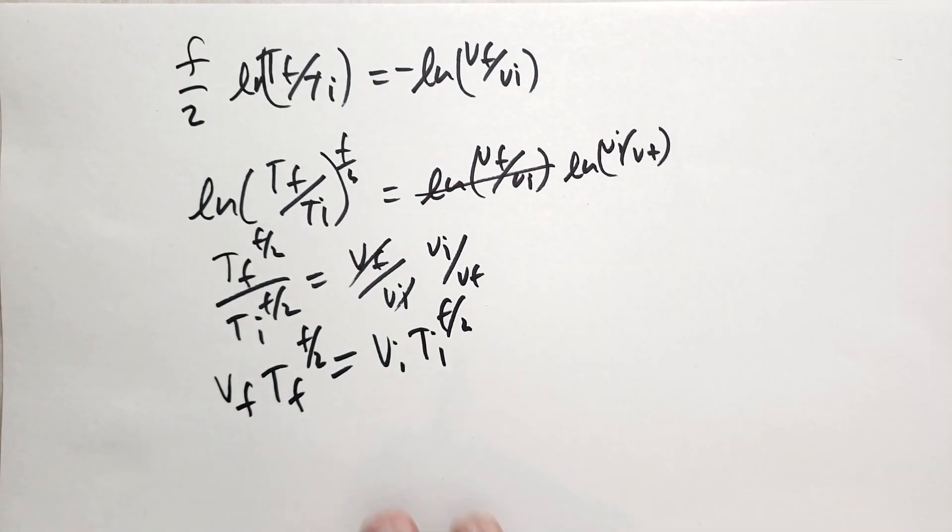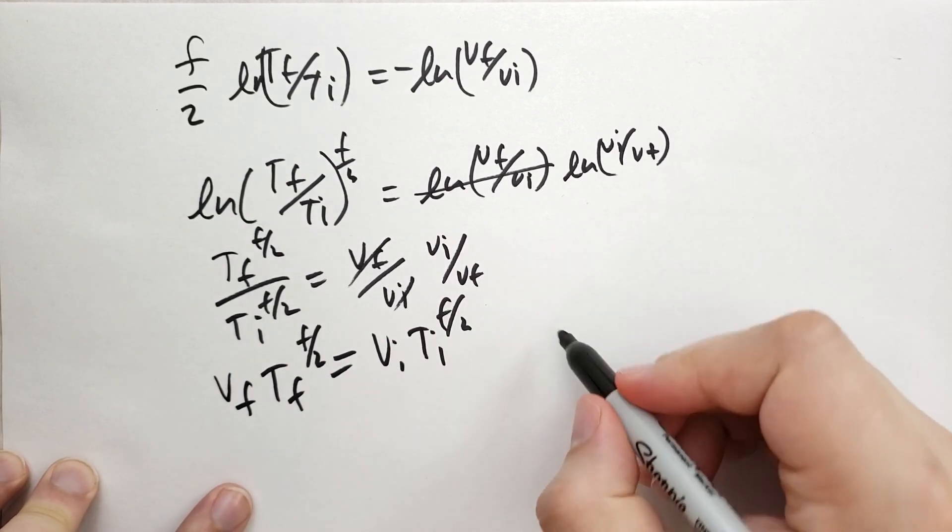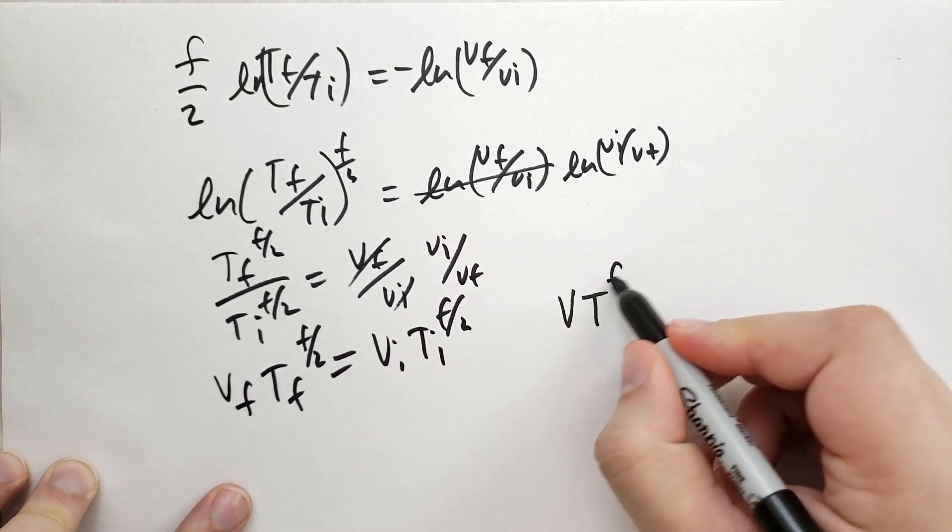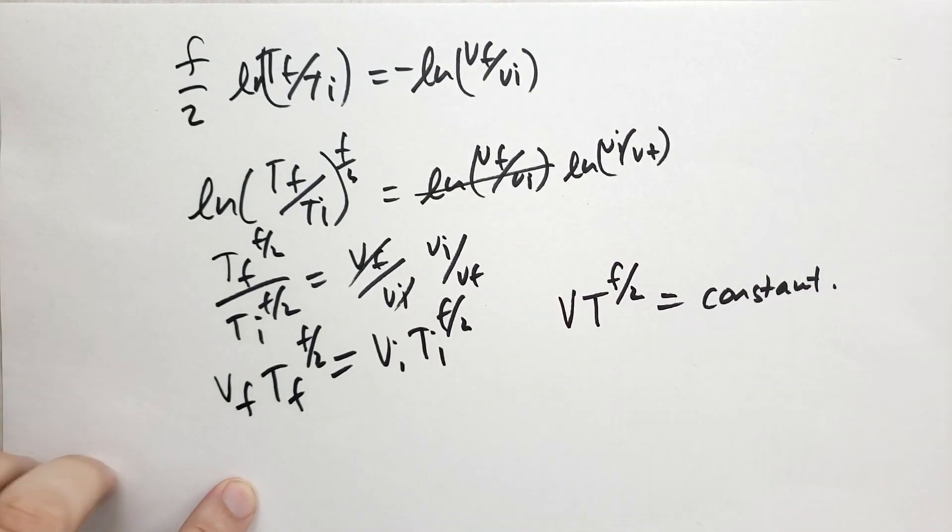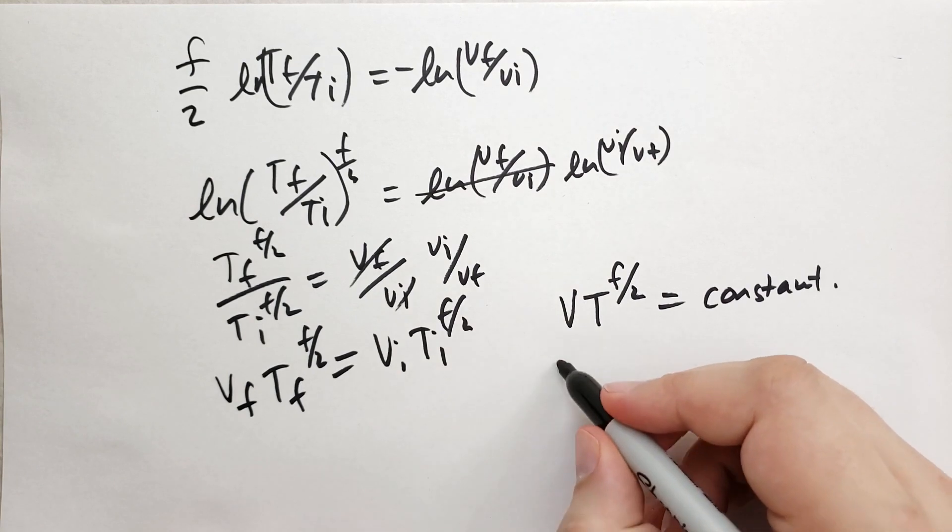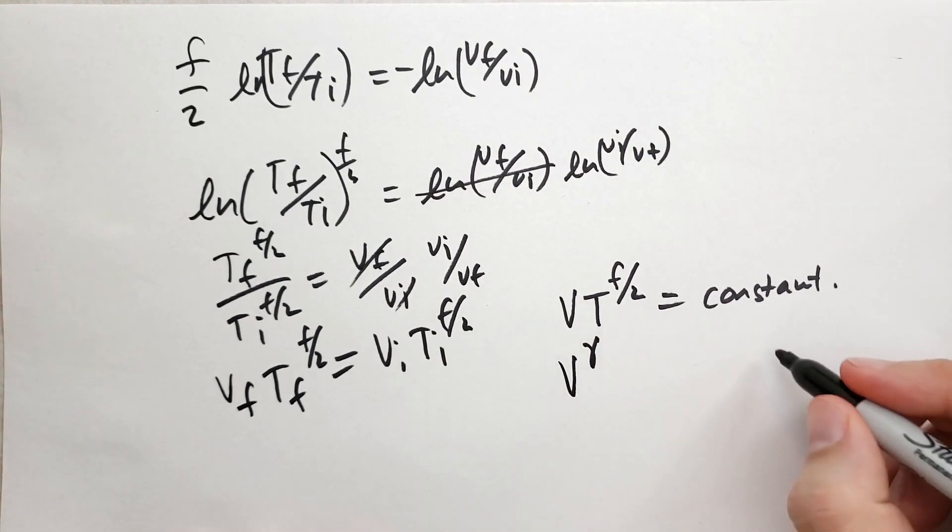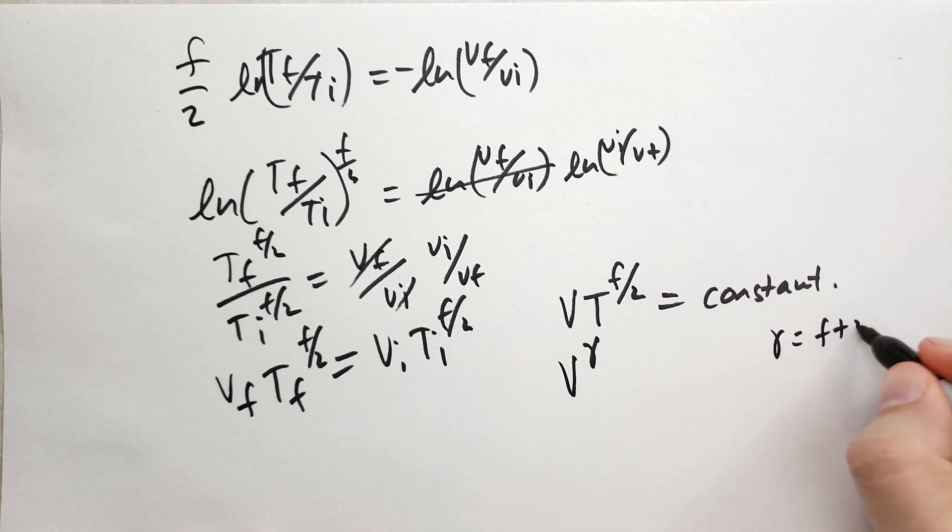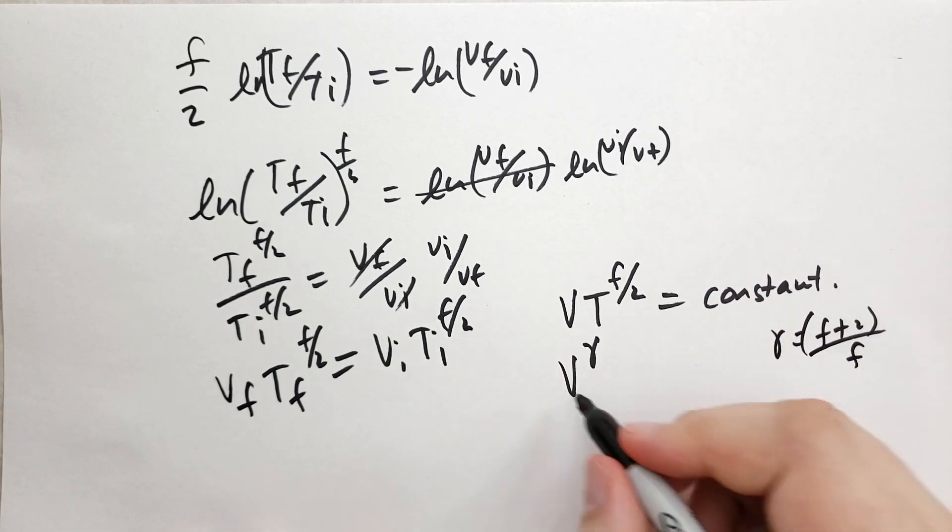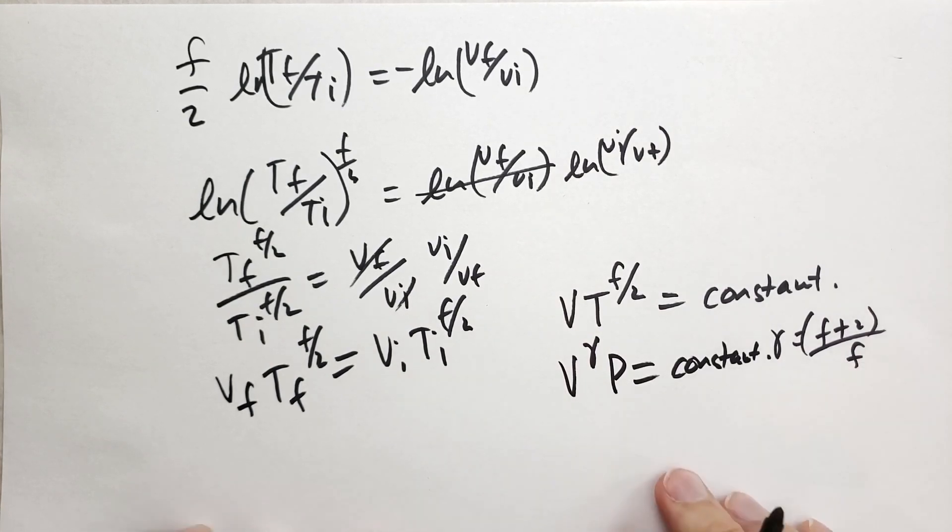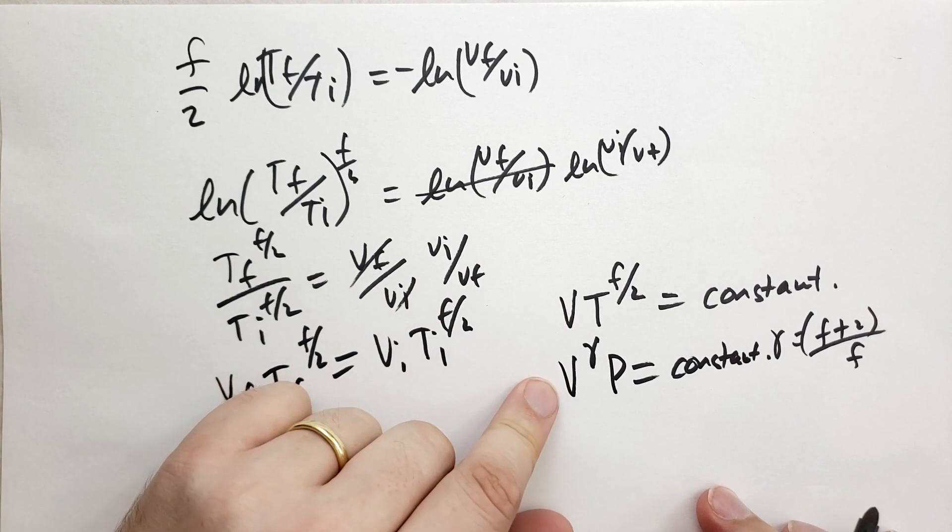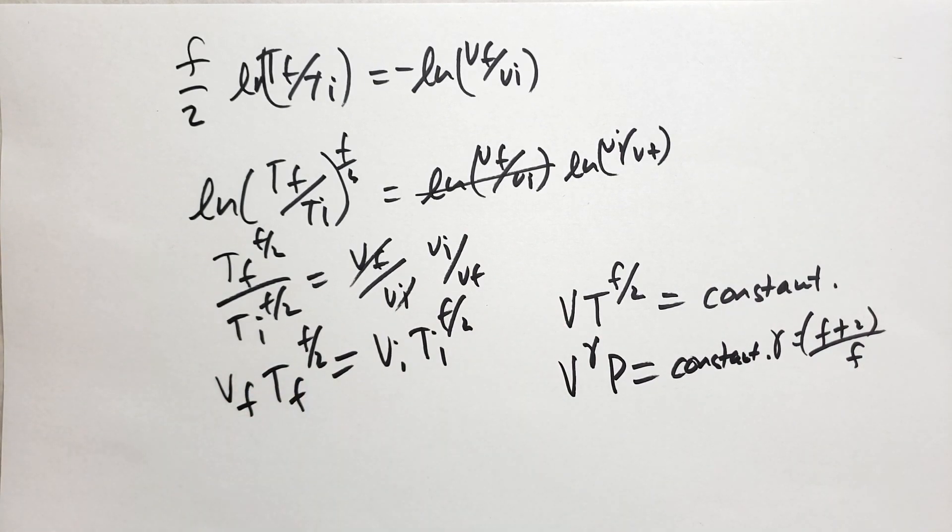And the way you can think about this is during adiabatic compression, that the volume times the temperature raised to the f over 2 power equals some constant. Problem 135 will have you derive equation 140, which will tell you that the volume raised to a factor gamma, gamma is f plus 2 over f, that this volume raised to the power of gamma times the pressure will also equal a constant. And so problem 135 is to try to go from here to here. I'm not going to give too many hints on that.